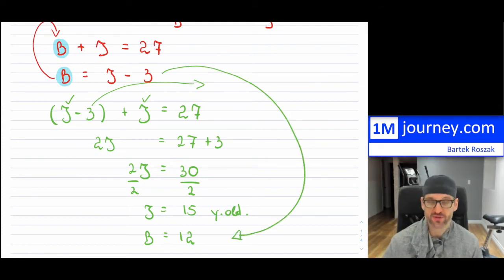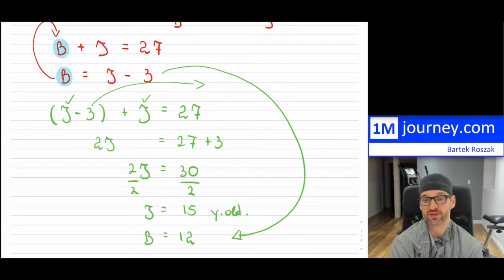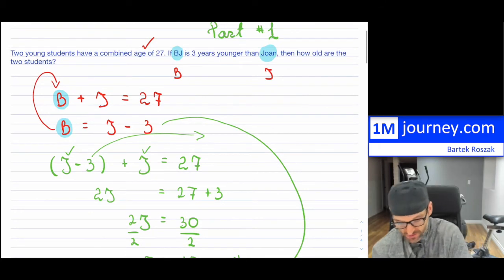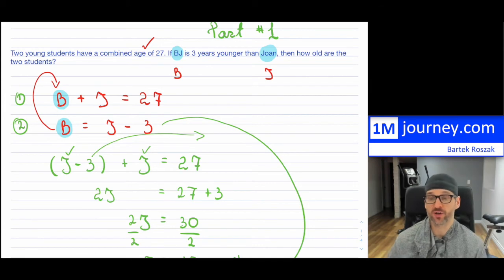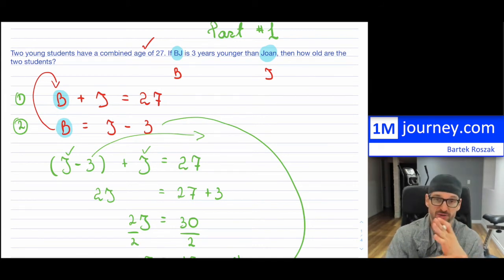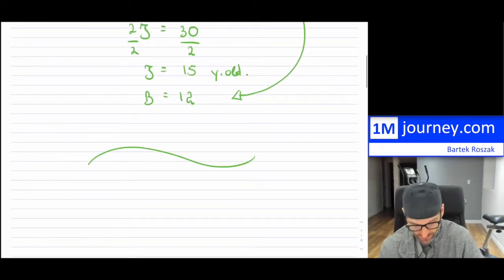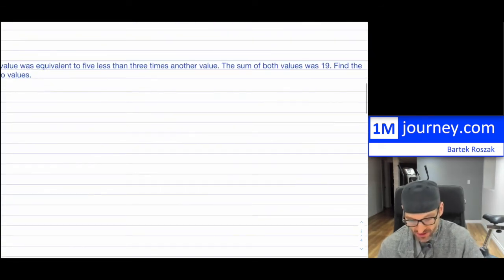So we've solved both equations. This is called a linear system — two equations, two unknowns — basically two lines whose intersection you're solving for. That's the first problem.